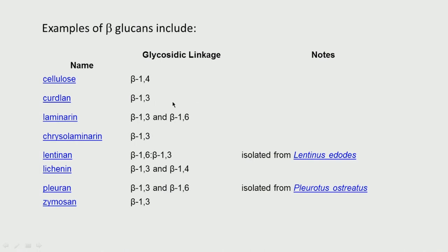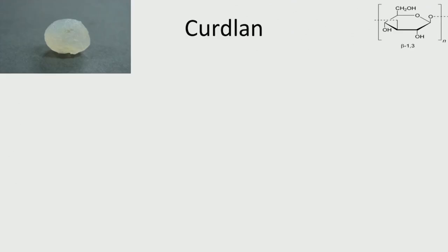Examples of beta glucans include: cellulose (beta 1,4), curdlan (beta 1,3), laminarin (beta 1,3 and 1,6), lentinan (beta 1,6 and 1,3), lichenin (beta 1,3 and 1,4), and zymosan (beta 1,3). Curdlan is widely produced by bacteria and is a beta 1,3 glucan. It has gelling properties, forming a triple helix structure that forms and breaks depending on temperature. Molecular weight is 10⁴ to 10⁶. Bacteria such as Agrobacterium, Rhizobium, and Alcaligenes produce about 50–70 grams per liter. It is insoluble in water, alcohol, and organic solvents, but dissolves in dilute bases, DMSO, and formic acid.